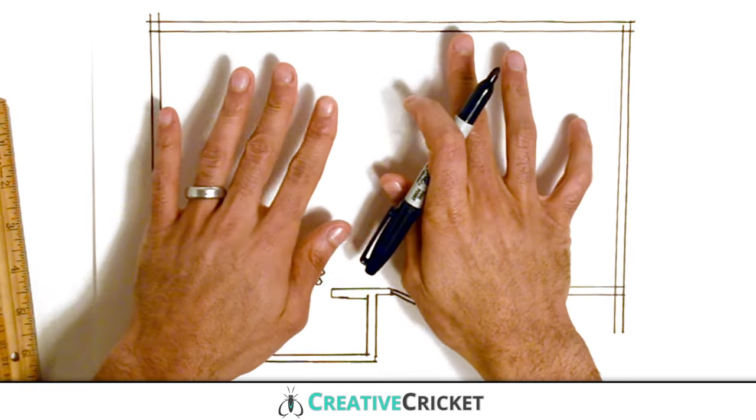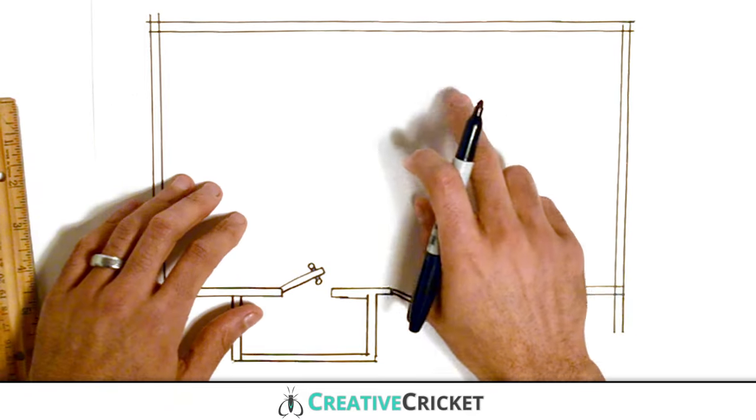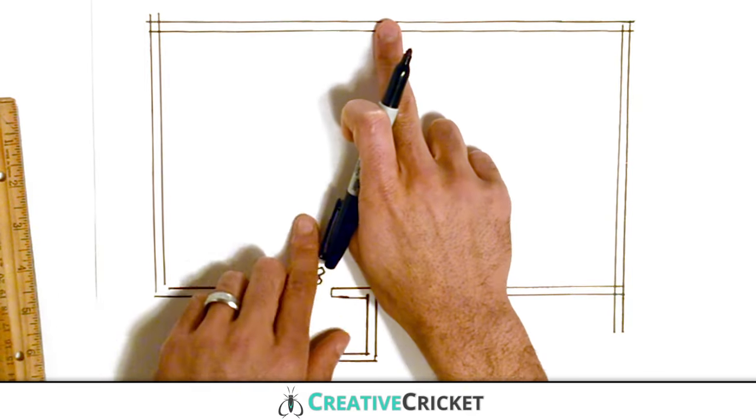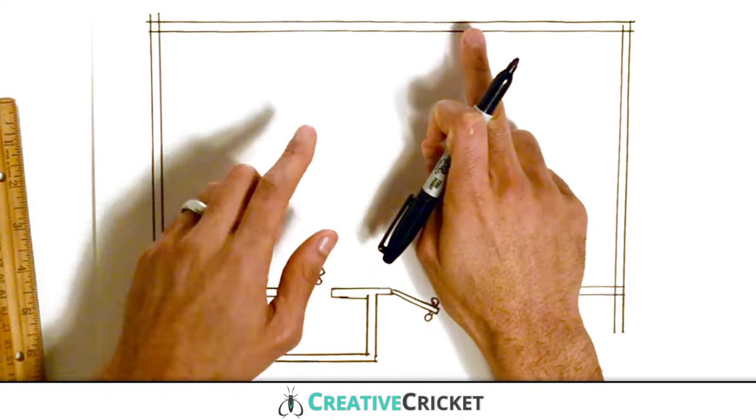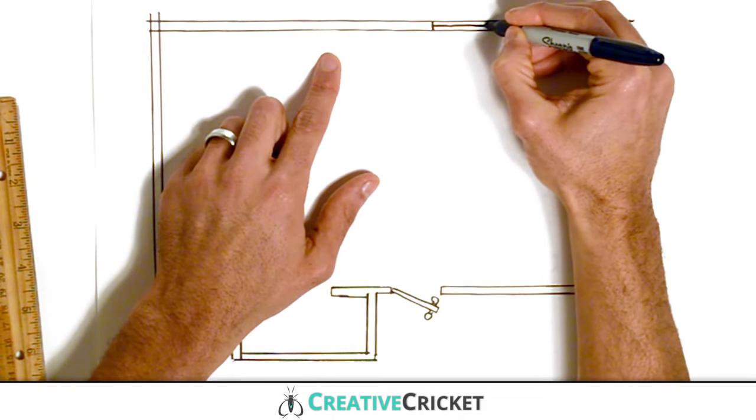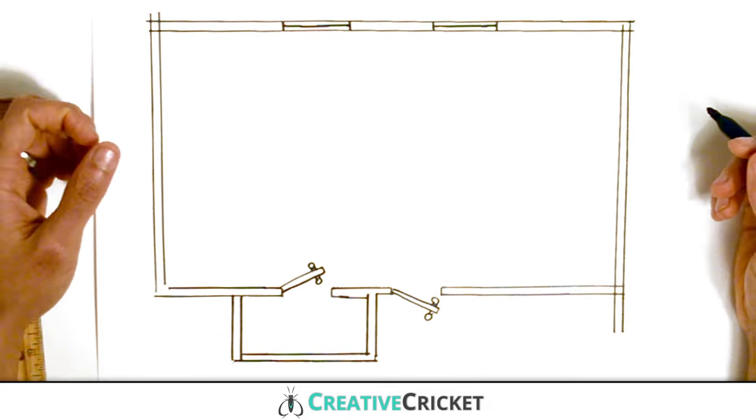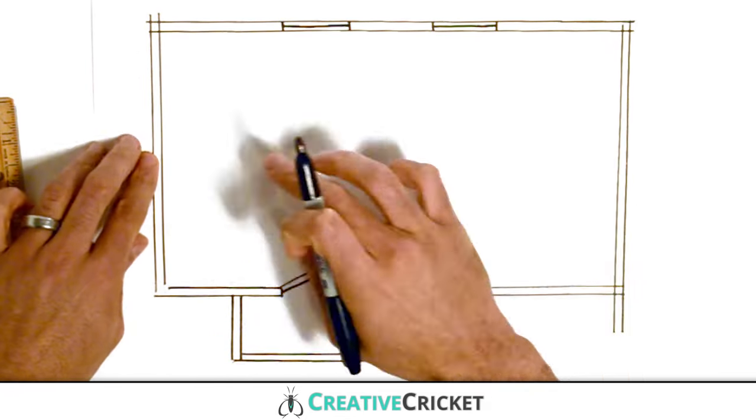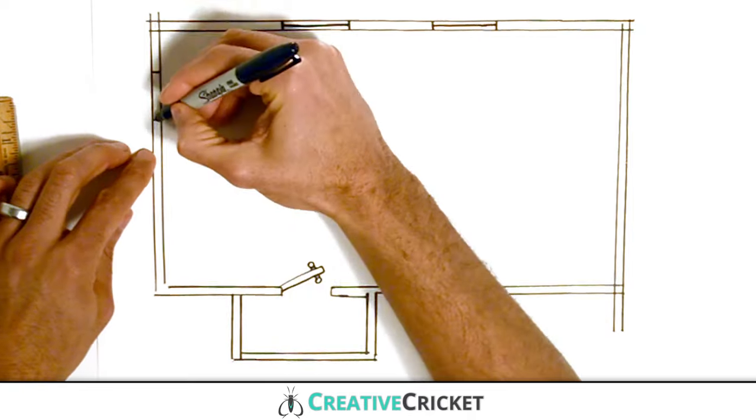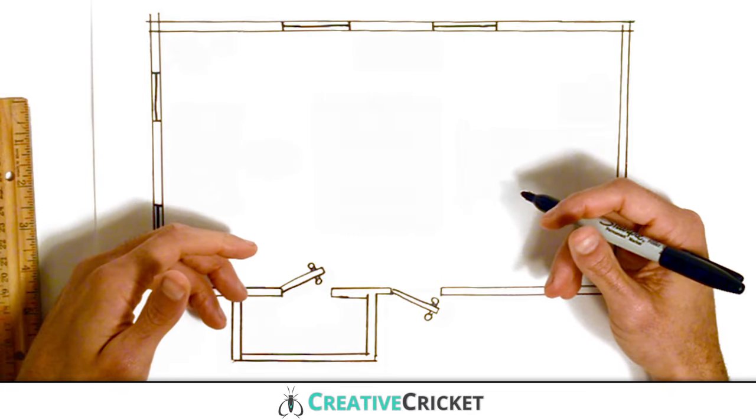Now let's add some windows in our walls to let some sunlight in. First I'll find the middle of my wall up here, then draw one window on either side with a little space in between. These lines just represent the windows frame. And I'll do the same thing on this wall.